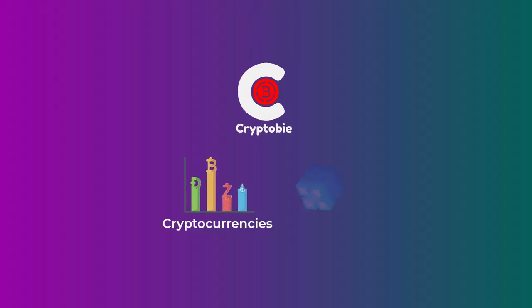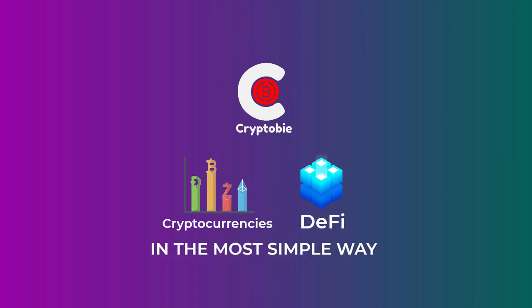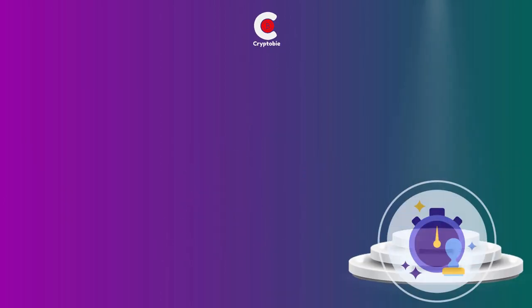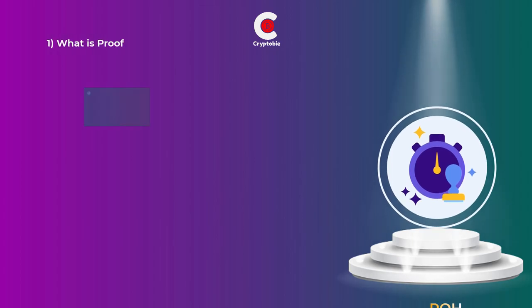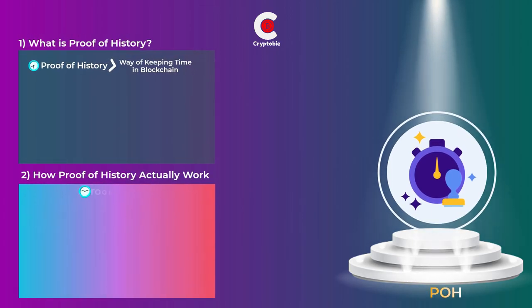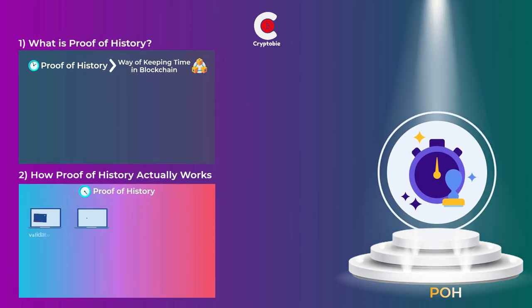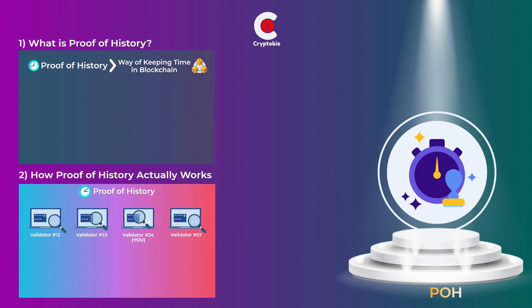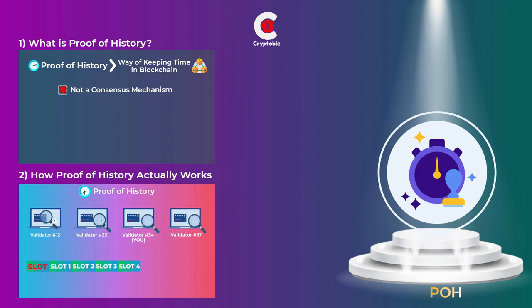This is where Proof of History comes in, to act as a universal clock for all leaders and validators. Welcome to CryptoBie, where we explain cryptocurrencies and DeFi topics in the most simple and beginner-friendly way. In this video you will learn what Proof of History is and how it actually works. We have included timestamps so you can easily skip to any part you want.